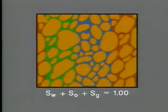Fluid saturation is represented by the symbol S and expressed as a percentage. Therefore, total fluid composition is S sub W, plus S sub O, plus S sub G, equals 1.